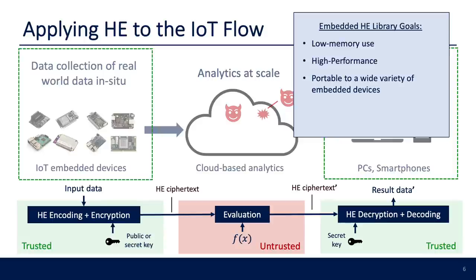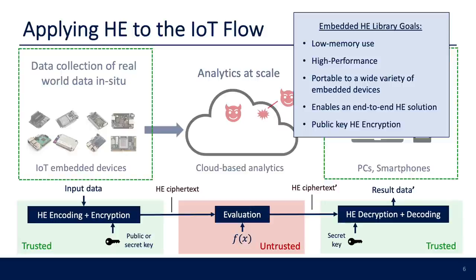We would need the library to have low memory use and be compatible with embedded device requirements, while not sacrificing too much performance. Ideally, the library would be applicable to a wide variety of embedded devices, since devices can be very diverse in capabilities. We would also like it to support an end-to-end HE deployment flow, and ideally support public key HE encryption in addition to symmetric HE encryption. Deploying only public keys on devices means that if a device is compromised, the attacker cannot decrypt legacy encrypted data stored in the cloud.